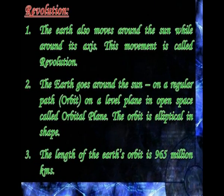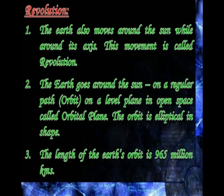Revolution: The earth also moves around the sun while rotating around its axis. This movement is called revolution. The earth goes around the sun on a regular path on a level plane in open space called the orbital plane. The orbit is elliptical in shape, and the length of the earth's orbit is 965 million kilometers.